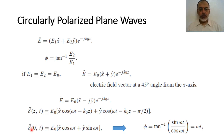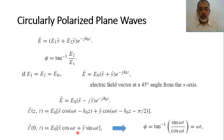Assuming Z equals 0 and looking at the electric field as a function of time, the electric field would be E0 multiplied by x̂ cosine(ωt) plus ŷ sine(ωt), which is effectively cosine(ωt − π/2). The direction of the electric field in the XY plane is determined by the angle phi = tan⁻¹(Y component / X component) = tan⁻¹(sin(ωt) / cos(ωt)) = tan⁻¹(tan(ωt)). So the angle phi equals ωt.